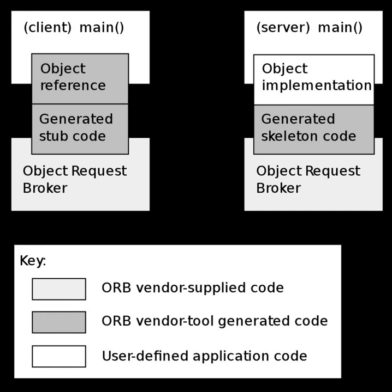The Common Object Request Broker Architecture is a standard defined by the Object Management Group, designed to facilitate the communication of systems that are deployed on diverse platforms. CORBA enables collaboration between systems on different operating systems, programming languages, and computing hardware. CORBA uses an object-oriented model although the systems that use CORBA do not have to be object-oriented. CORBA is an example of the distributed object paradigm.